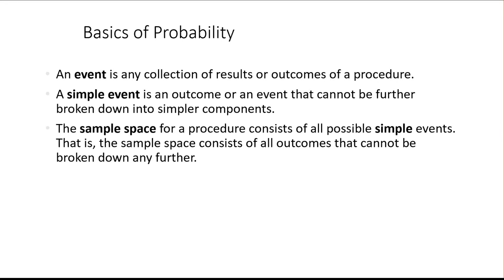Probability is calculating the chance that something's going to happen. An event is what could happen — what are the different things that could happen when we look at a situation? A simple event is one single thing in and of itself. If we have a non-simple event, it means there are multiple ways it could happen.